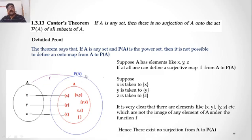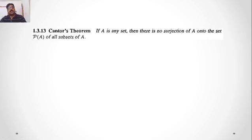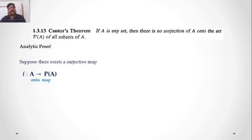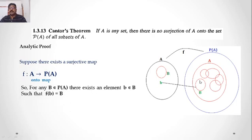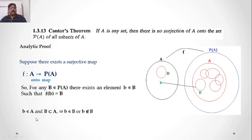Now we are going to prove this analytically using set theory. Suppose there exists a surjection map F from A to P(A). Here A maps to P(A), where P(A) consists of all subsets. F is a surjection from A to P(A). Now, for any subset B of A — that is, any element of P(A) — since F is a surjection, there exists an element in A such that F maps it to B.